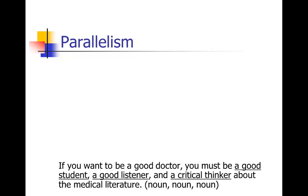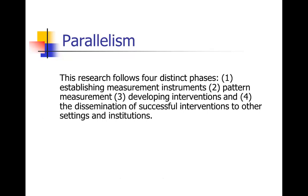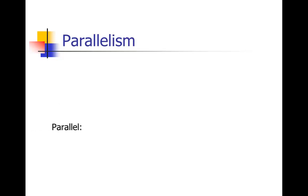Here's another example of something that's not parallel in a numbered list — and even numbered items have to be parallel. It reads: 'This research follows four distinct phases. One, establishing measurement instruments. Two, pattern measurement. Three, developing interventions. And four, the dissemination of successful interventions.' Notice we've got two that match and two others that match — establishing and developing match, and measurement and dissemination match — but we want all four to match. The way to do that is to turn them all into gerunds, ING words.